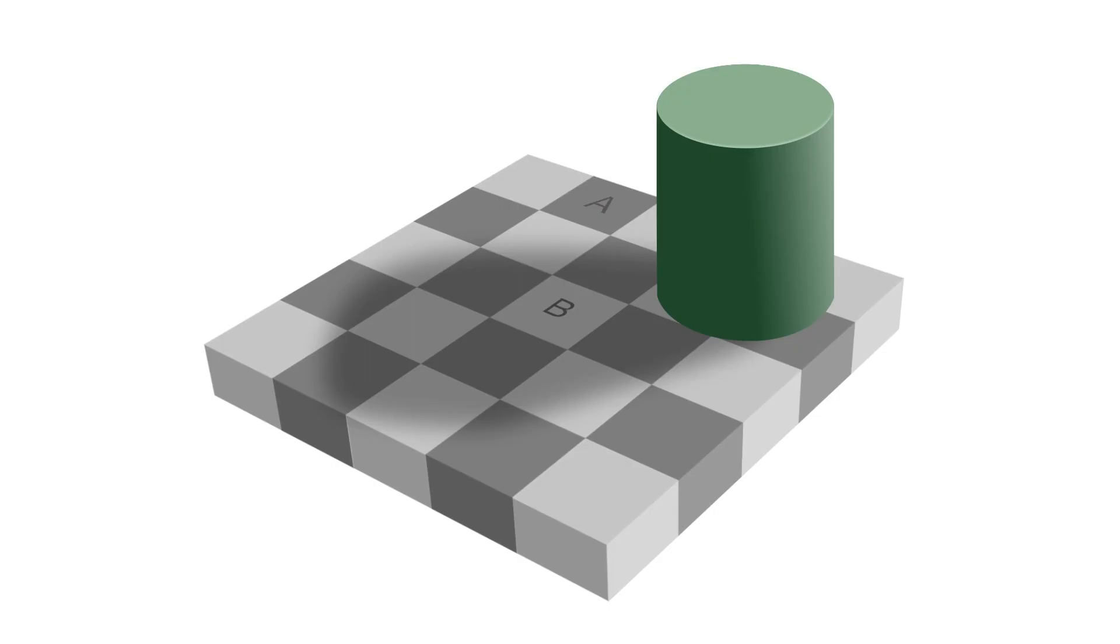Your mind is perceiving square B as lighter because we automatically assume things in shadows are lighter than they actually are. But if we connect the two squares with a rectangle of the same color, we see that square A and square B are really the same. Our minds are easily fooled by this illusion.